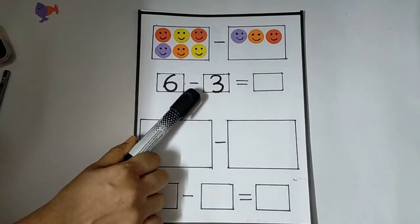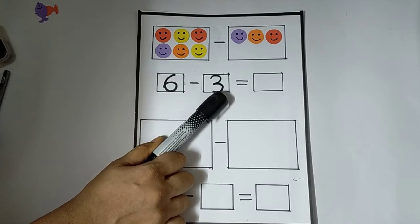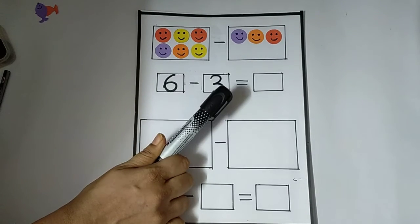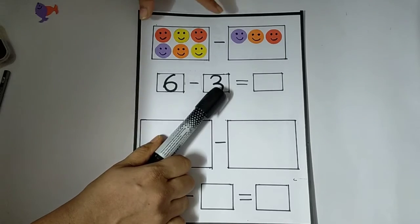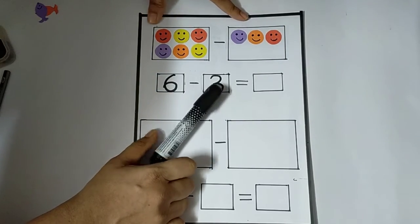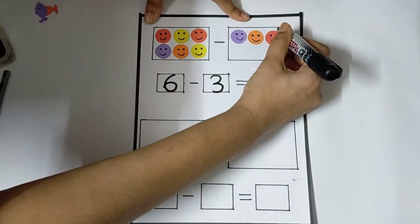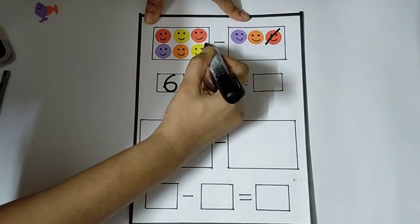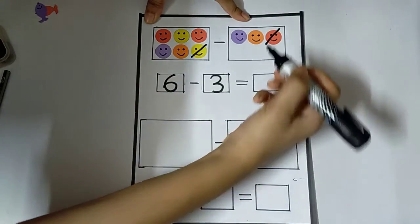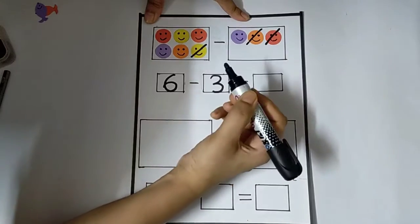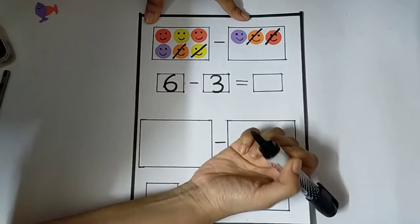So, six minus three. So, how many should I cut away? Three, right? So, you will cut here. One, two, three.